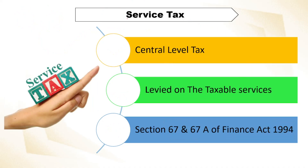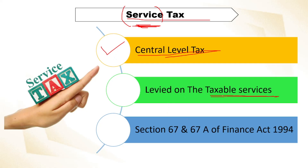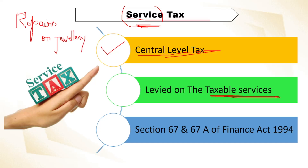Next is service tax. The name itself tells us it is for services. This is also a central level tax governed by the central government. It is levied on taxable services. For example, repairs on jewelry — if you take your old jewelry for polish or some rework, that is a service they provide and that is a taxable service. Similar taxable services are covered under this.